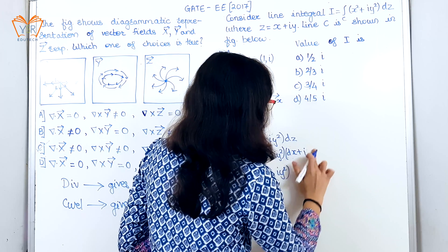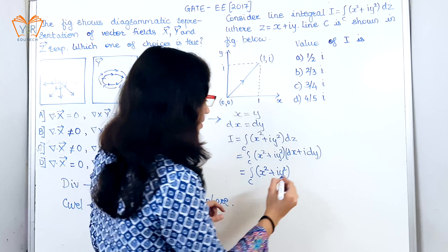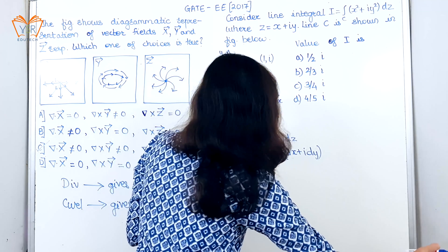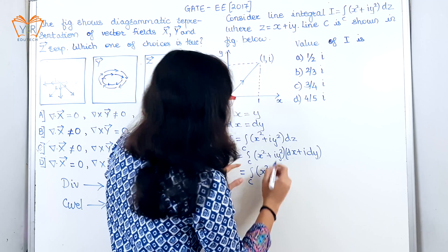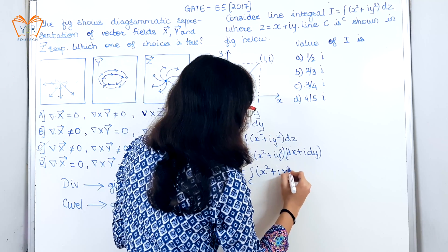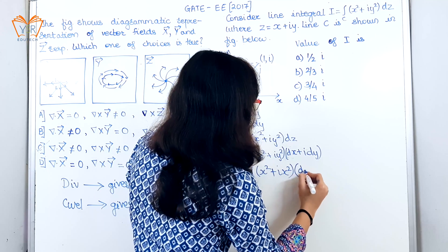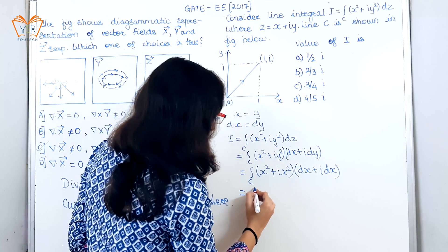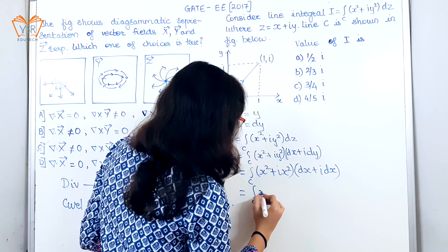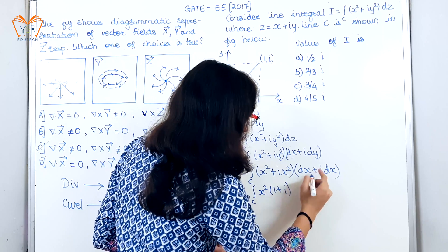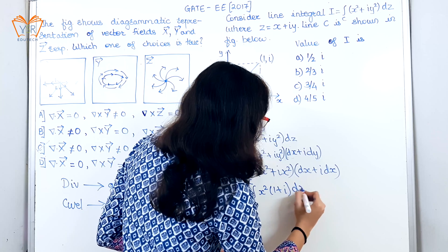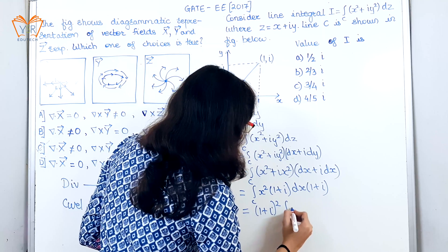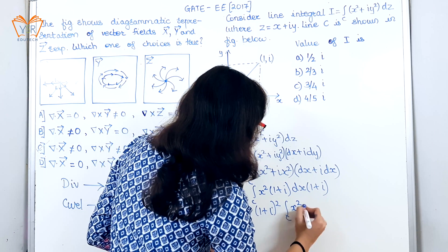So dz = dx + i·dy. Substituting, we get x² + iy² with x = y. Taking x² common we get (1 + i), and taking dx common we also get (1 + i). Taking (1 + i) outside, we get (1 + i) · ∫x² dx.